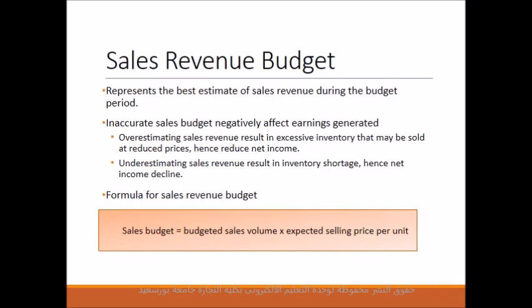The sales revenue budget is prepared first, and all other budgets depend on it. It represents the best estimate of sales revenue during the budget period. It is important to note that an inaccurate sales budget adversely affects net income. Overestimating sales revenue may result in excessive inventory sold at reduced prices, causing income decline. Underestimating sales revenue may result in inventory shortage and net income decline as well. Budgeted sales revenue is obtained by multiplying budgeted sales volume by the expected selling price per unit.